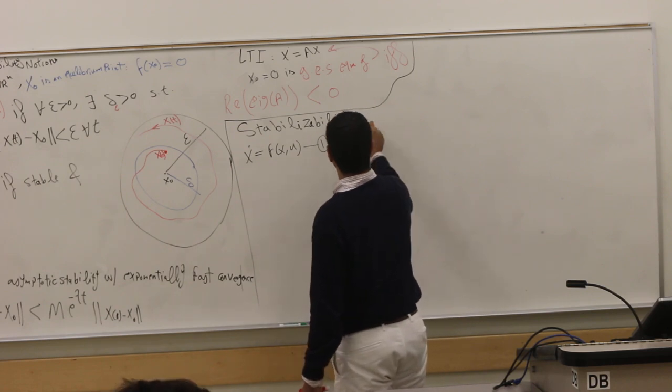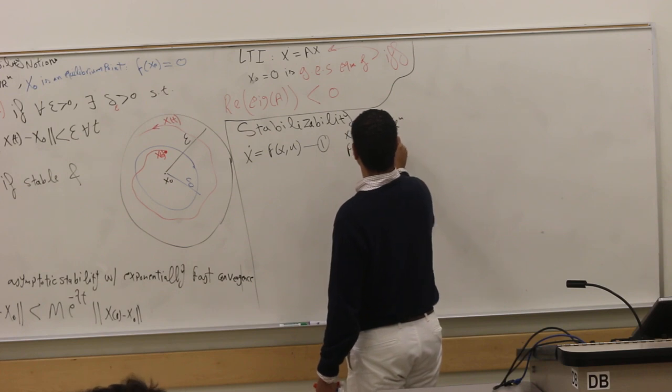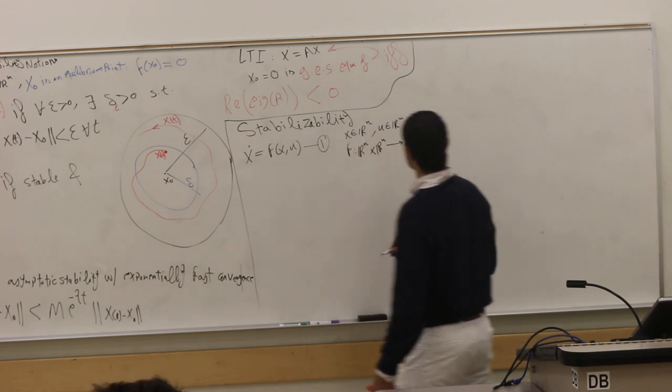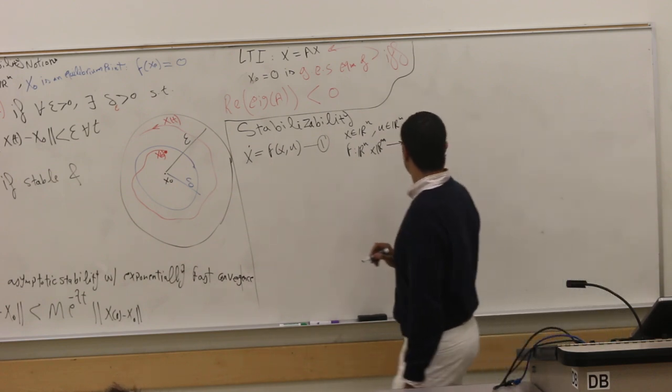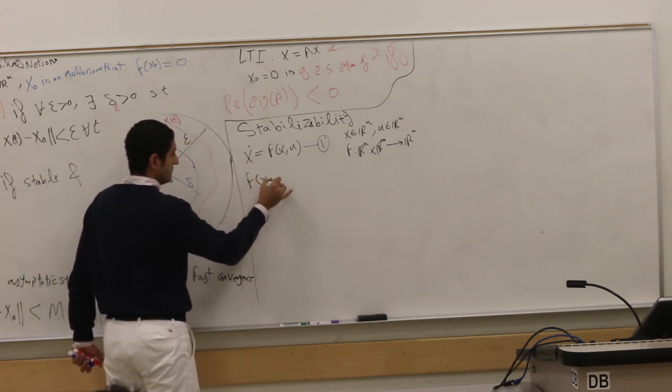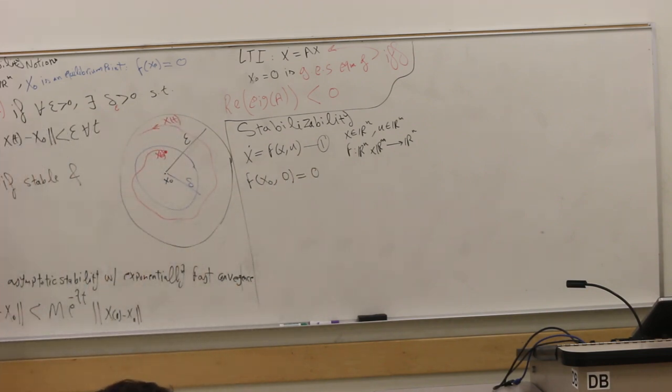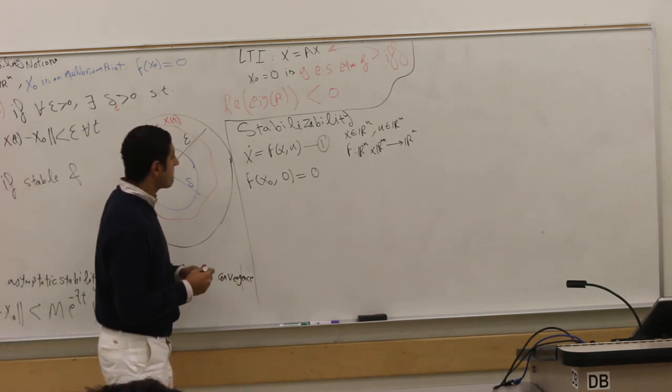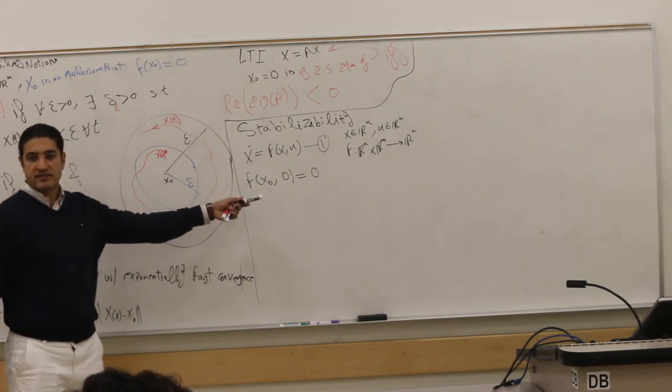So x in R^n, u in R^m, so f is a map from R^n cross R^m to R^n again. We have an equilibrium point. So f of x_0 and zero control is zero, alright?